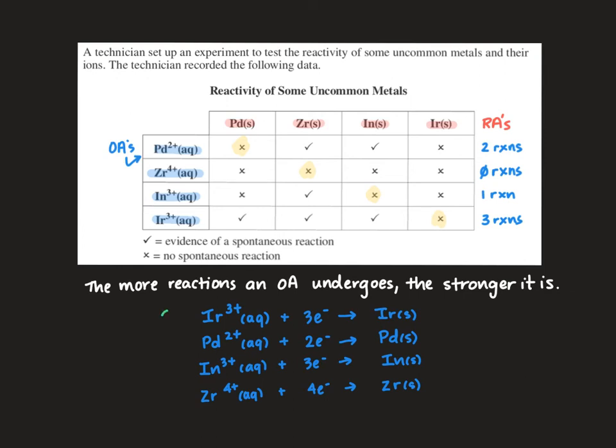So in this table our strongest oxidizing agent is going to be in the top left. That is indium—or sorry, iridium 3+.